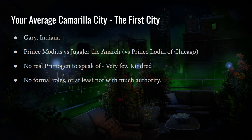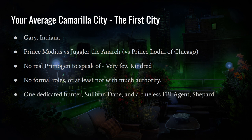When Vampire was first designed it was very much a street-level, small-scale kind of game. If you want a good look at how White Wolf imagined a small city of vampires, check out V1 and how they described Gary, Indiana — it's also in Chicago by Night, the first book. There's also a dedicated vampire hunter, Sullivan Dane, and an FBI agent, Agent Shepard — template vampire hunters that served as the primordial basis for White Wolf's future work on the Society of St. Leopold, Hunters Hunted, and Project Twilight.